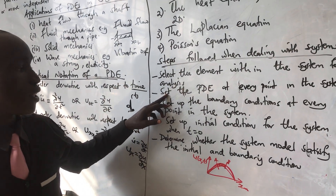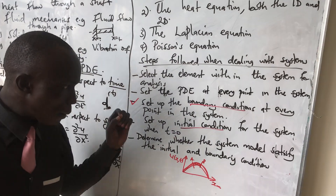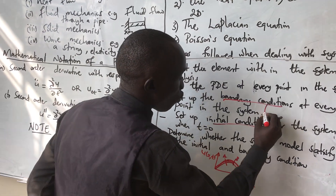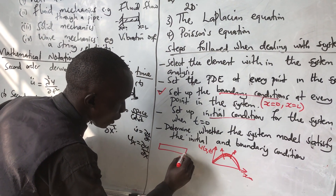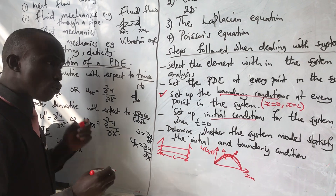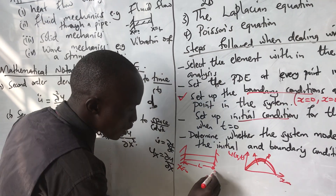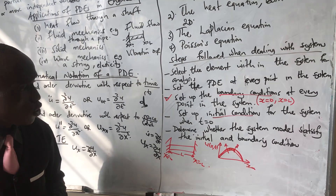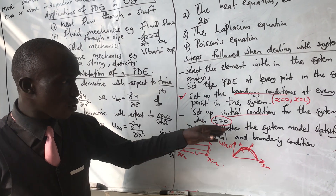Step two: we set a PDE at every point in the system. Then, the most important step — we set boundary conditions and initial conditions. To solve a PDE, you must set boundary conditions, for example when x is 0 and when x is L. For a shaft of length L, we consider what happens at x = 0 and at x = L. The initial condition is about time: we set what happens when time T is 0.